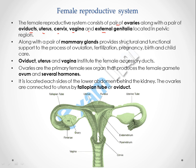Ovaries are located at the lower abdomen behind the kidneys. Ovaries are two in number, and the oviduct — also called the fallopian tube or uterine tube — are also two in number. That is why they are called a pair of ovaries and a pair of oviducts. The role of the fallopian tube is to connect the ovary to the uterus.